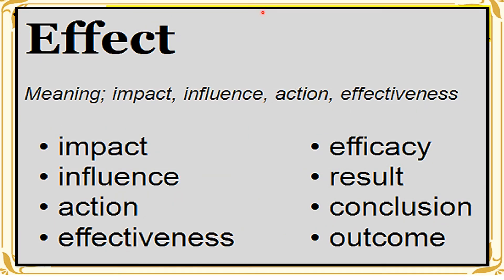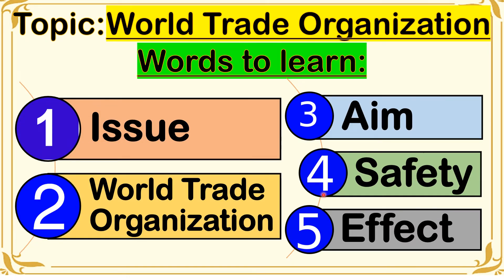And the last vocabulary word is effect. Effect means impact, influence, action, effectiveness, efficacy, result, conclusion, and outcome. So effect means what is the outcome or result of doing something. So these are the five words that can help us better understand our topic for today: issue, World Trade Organization, aim, safety, and effect.